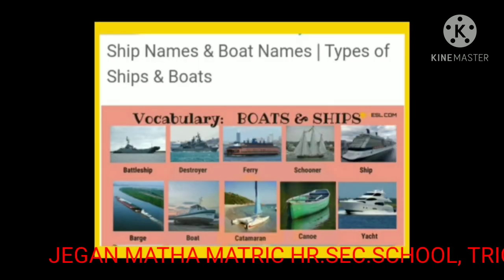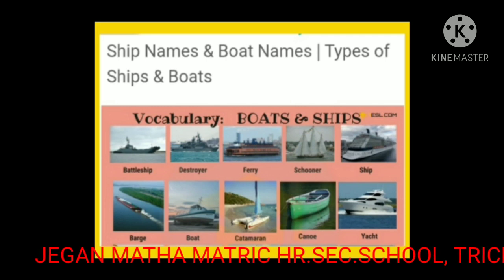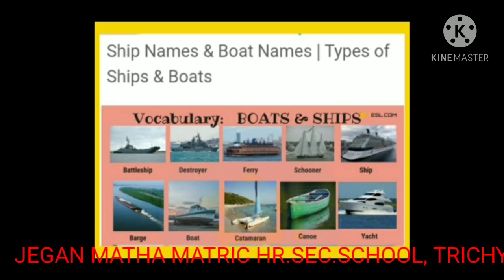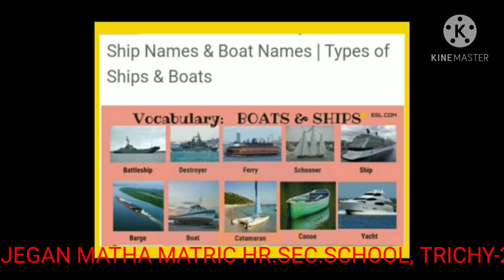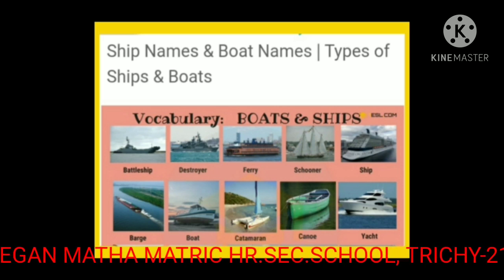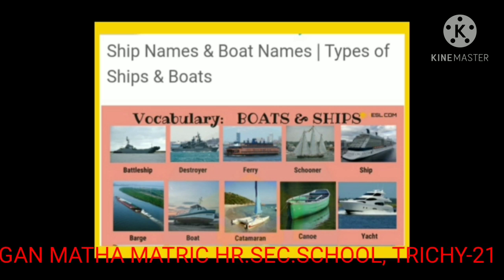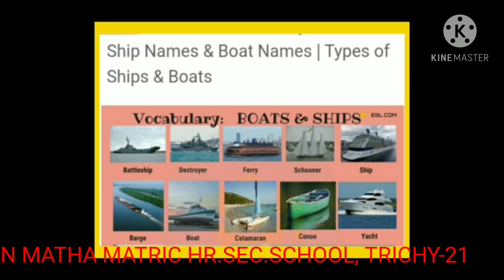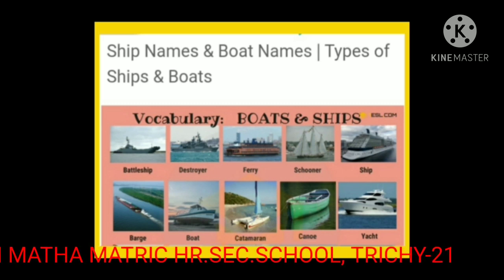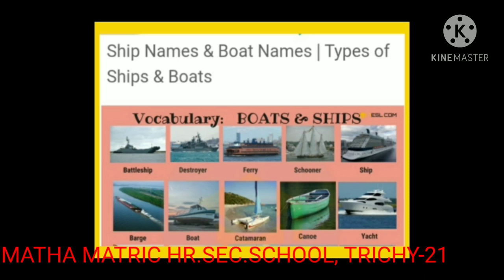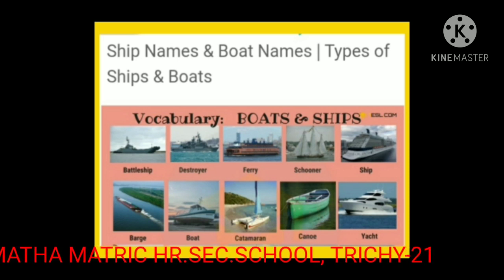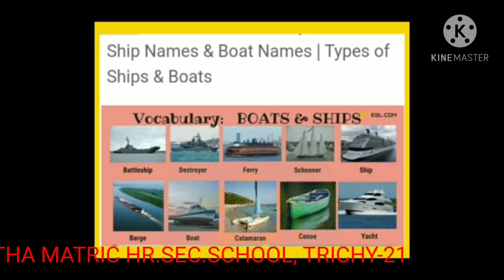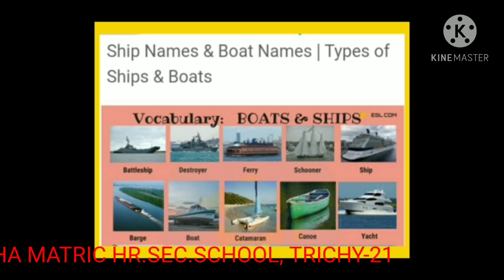In this picture you can see different ships and boats. The first one is a battleship, the second a destroyer, the third a ferry, the fourth a schooner, the fifth a ship, the sixth a barge, the seventh a boat, the eighth a catamaran, the ninth a canoe, and the tenth a yacht.